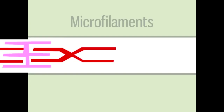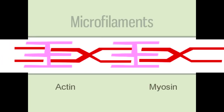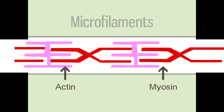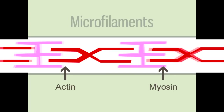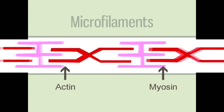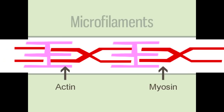Actin filaments interact with other filaments composed of myosin — two key components of muscle cells. Myosin filaments have structures that can extend and bind to actin filaments, allowing the two filaments to slide past each other. This mechanism allows muscle cells to stretch and shrink during contraction and relaxation of muscles.